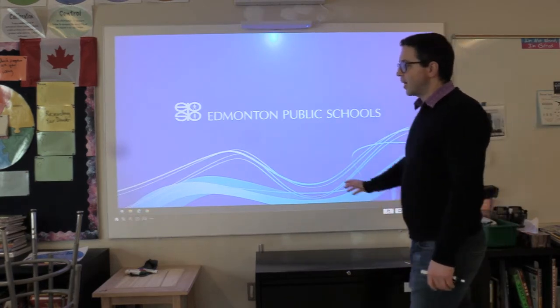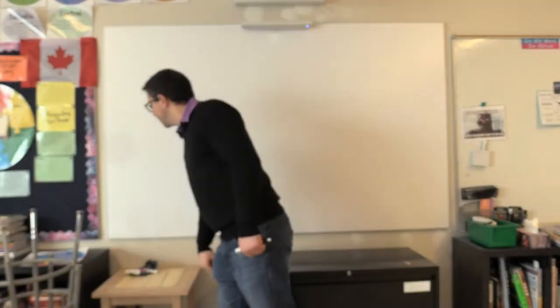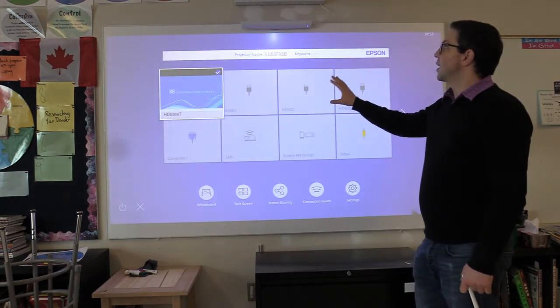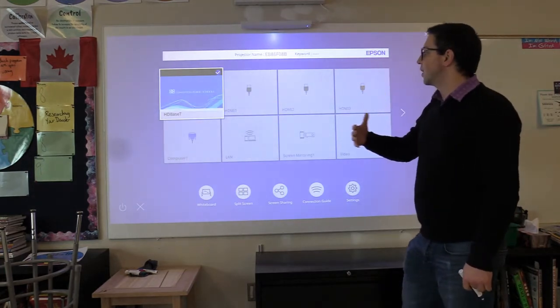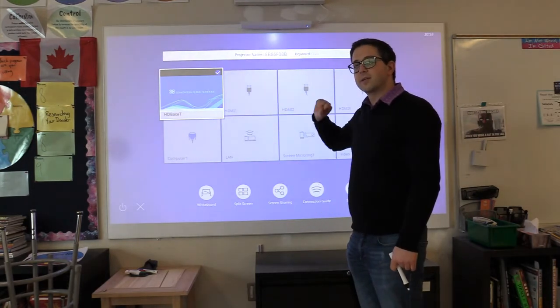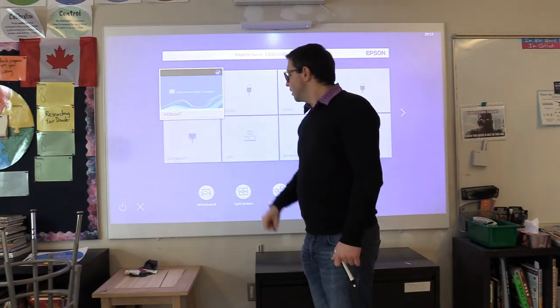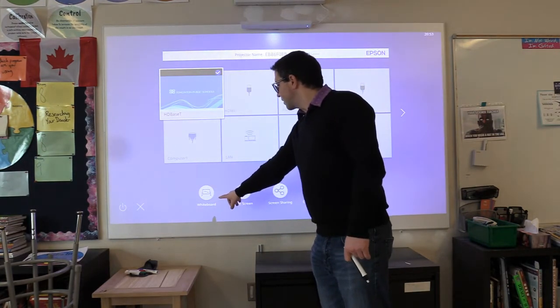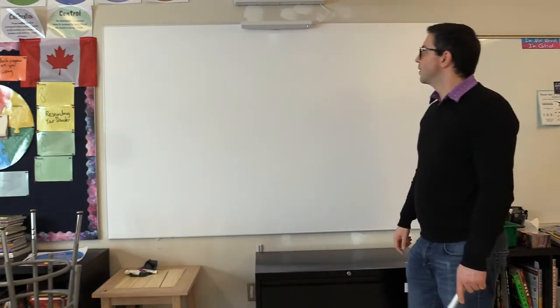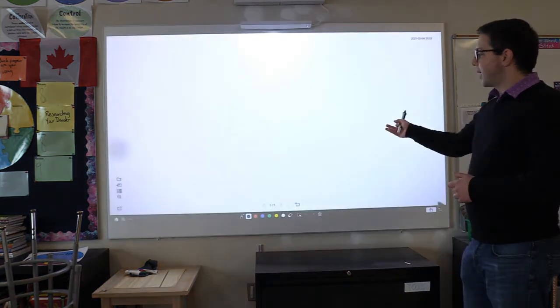To do that, I'm going to come over here to the home button and it'll pull up all the different inputs that I can access for the computer. If I had a document camera or another device hooked up I could easily click and go to that. You can see that this is my PC. Down here is where I would access the whiteboard, so from here I just click and now I have my whiteboard.